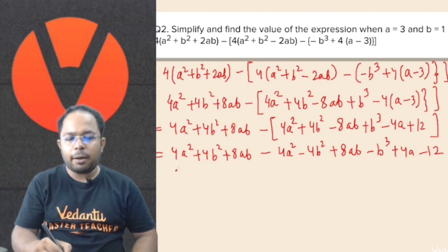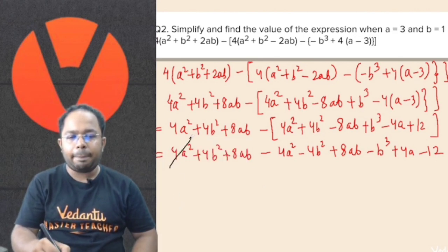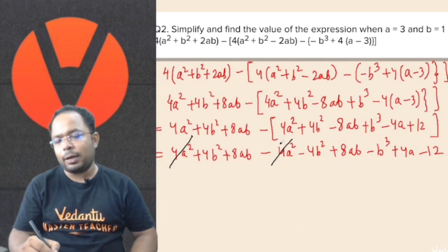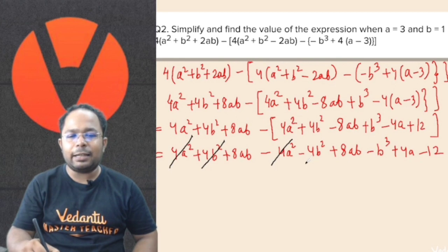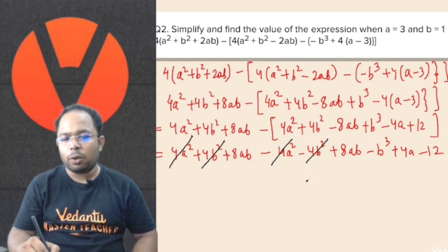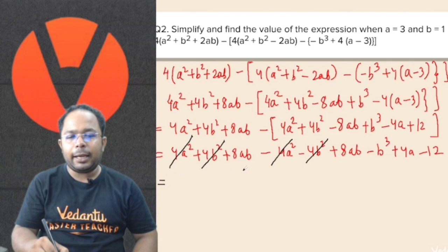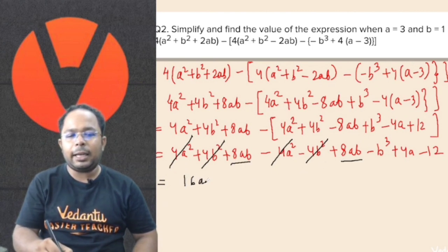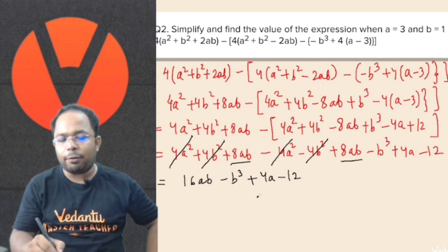Let's see what we see here. We see that 4a squared and minus 4a squared cancel each other. Similarly, 4b squared gets cancelled with minus 4b squared. And 8ab and positive 8ab becomes 16ab, minus b cubed plus 4a minus 12. So this is our simplified form.